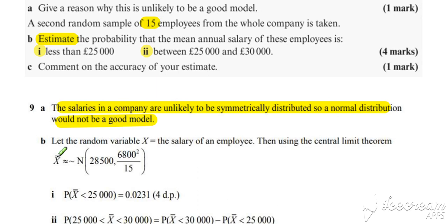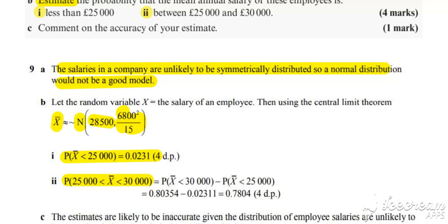So using the central limit theorem, X bar will approximate to a normal distribution with the same mean and reduced variance by a factor of 15. And then we can work out probability X bar is less than 25,000 and the probability that X bar is between 25,000 and 30,000 in the usual way from our calculator.